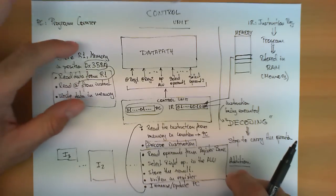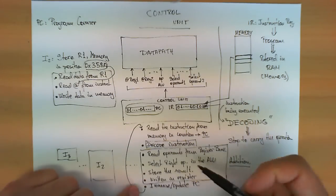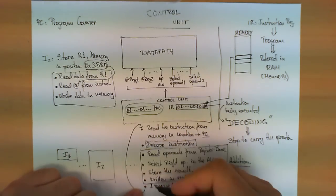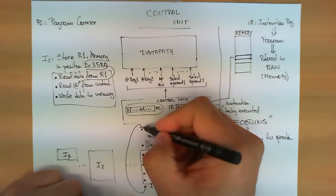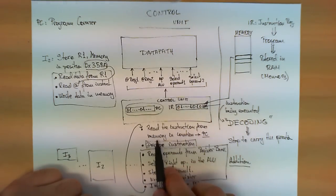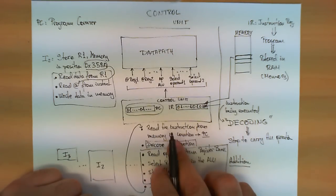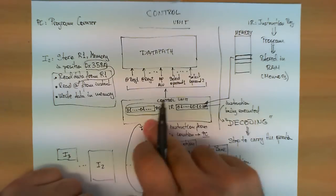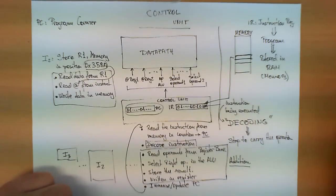Once this instruction is executed, the loop continues: we increment and update the PC, and the control unit goes again to read the next instruction from memory at the location pointed to by the PC. This loop repeats itself forever.